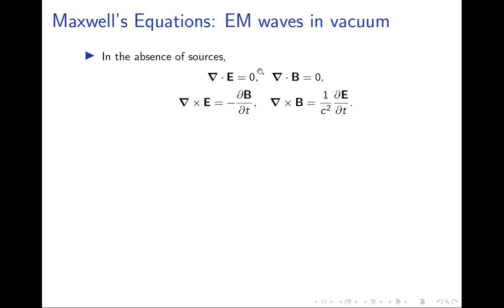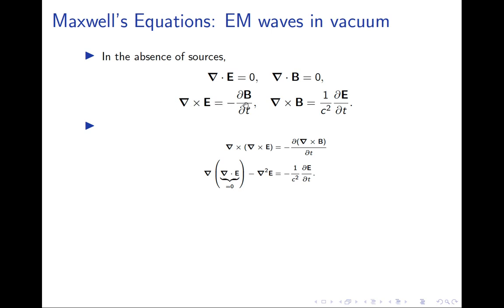In the absence of sources, Gauss's law becomes divergence of E equals zero (rho = 0), and the Ampere-Maxwell law becomes curl of B equals mu_0 * epsilon_0 * dE/dt (J = 0). To show E and B obey a wave equation, we take the curl of Faraday's law: curl of (curl of E) equals minus d/dt of (curl of B), and apply the vector identity for curl of curl.